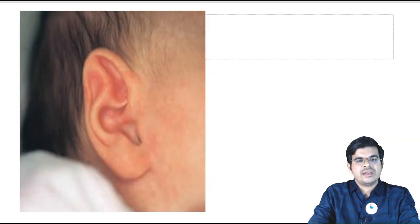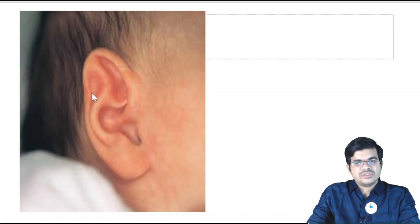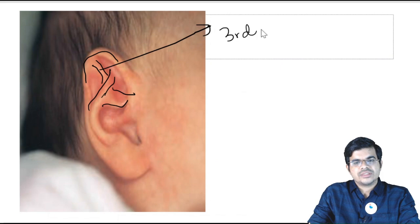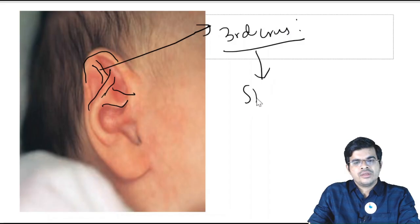Now what is this? You can see you have a helix here, you have an antihelix here, and along with these there is a third crus. And what is this third crus known as?